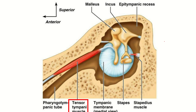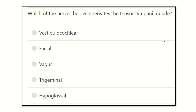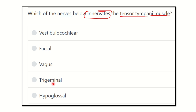Hello everyone, welcome to another question and answer session for the MRCS exam. The question is: which of the nerves below innervates the tensor tympani muscle? The options are vestibulocochlear nerve, facial nerve, vagus nerve, trigeminal nerve, and hypoglossal nerve.